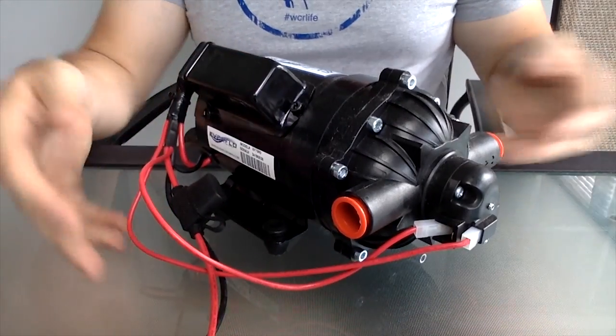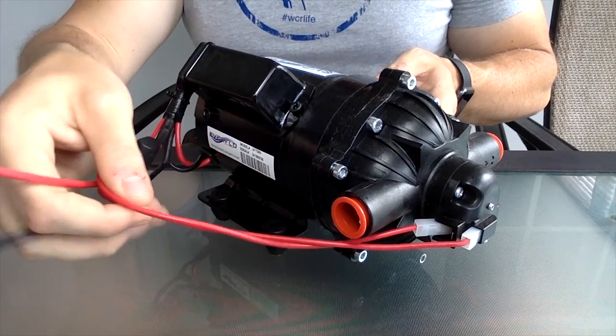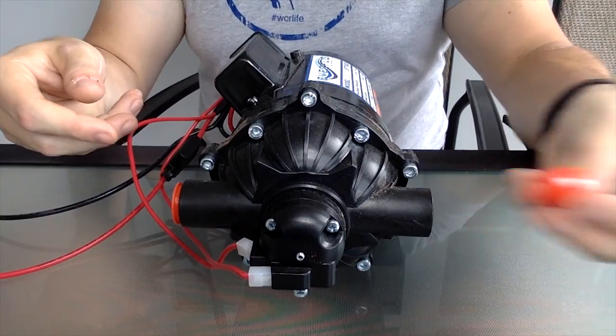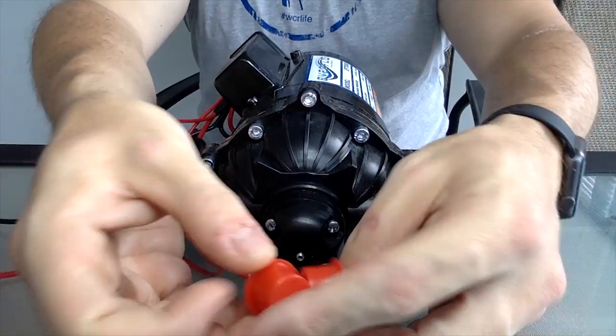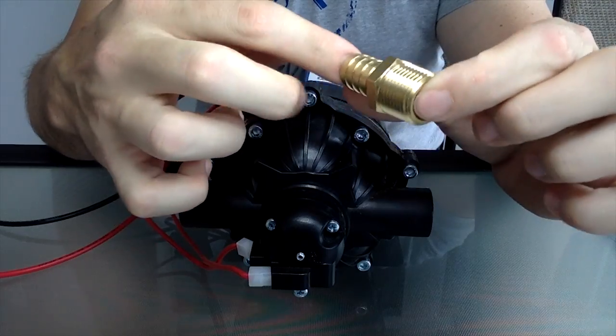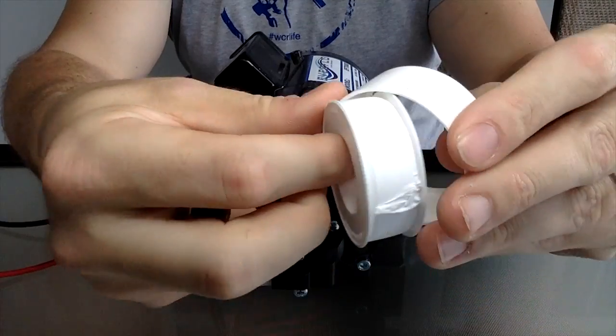So first of all, take the pump out and you'll see it has a simple 12 volt red and black connections. Those are not going to any type of specific couplers. Go ahead and remove the thread caps and find a barb to thread section.